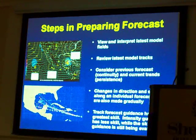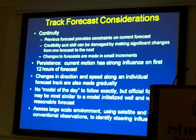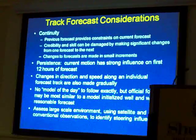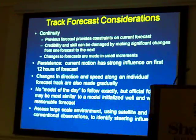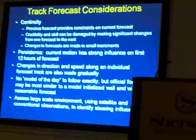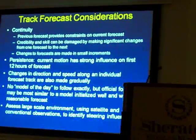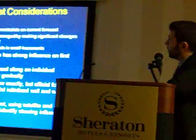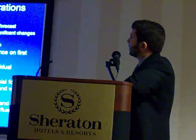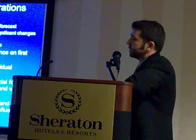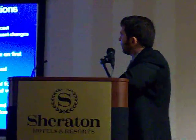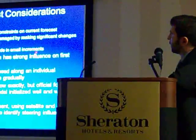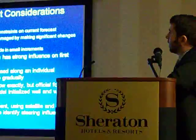When it comes to intensity guidance, it's a lot less skillful. This is just another summary slide with our considerations. The previous forecast is a heavy constraint. If we start moving the track around — we call this the windshield wiper effect — then we lose credibility and the skill actually goes down. We know this because we've done this in the past, so changes to the forecast are made in very small increments over time.